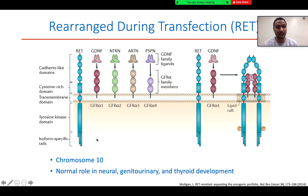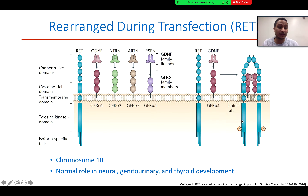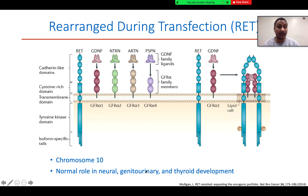To give a brief background on RET — RET stands for 'rearranged during transfection.' RET is a protein tyrosine kinase that belongs to the GDNF family of ligands. Once the ligand binds to the receptor, this leads to the dimerization of RET, which in turn results in the autophosphorylation of the downstream tyrosine kinase residues. RET is normally present on chromosome 10 and has a normal role in neural, genitourinary, and thyroid development.